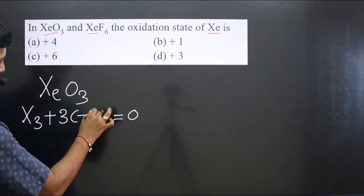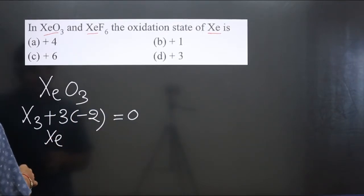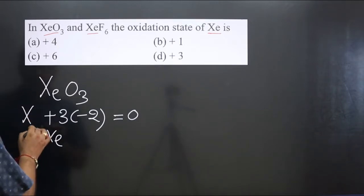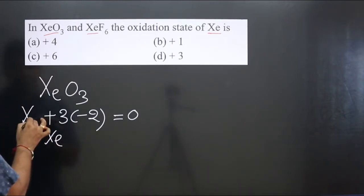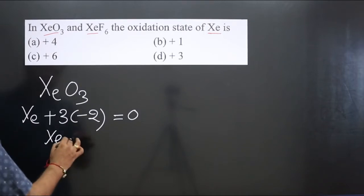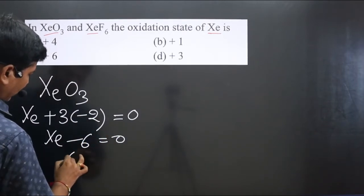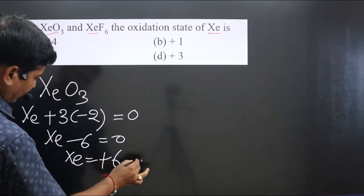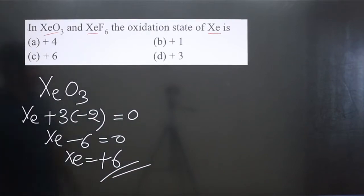Simplify: xenon is there, so I can mention it is xenon, x is there. We have x minus six equals zero. Then we get xenon is equal to plus six. Xenon is present in plus six oxidation number.